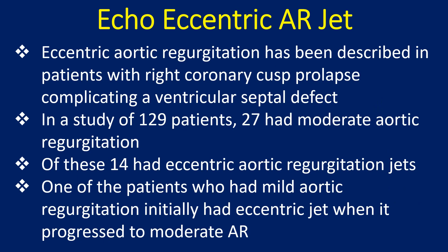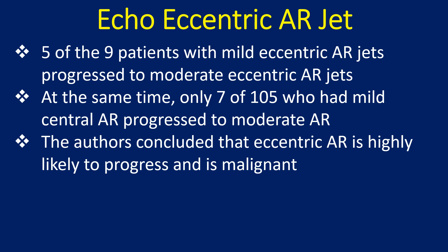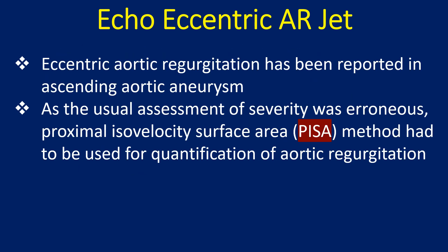Eccentric aortic regurgitation has been described in patients with right coronary cusp prolapse complicating a ventricular septal defect. In a study of 129 patients, 27 had moderate aortic regurgitation, of which 14 had eccentric AR jets. One patient who initially had mild AR with an eccentric jet progressed to moderate AR. Eccentric aortic regurgitation has also been reported in ascending aortic aneurysm. As standard severity assessment was unreliable in these cases, the proximal isovelocity surface area (PISA) method was used for quantification. The PISA method is described in another video on this channel. Five of 9 patients with mild eccentric AR jets progressed to moderate eccentric AR jets, while only 7 of 105 with mild central AR progressed.